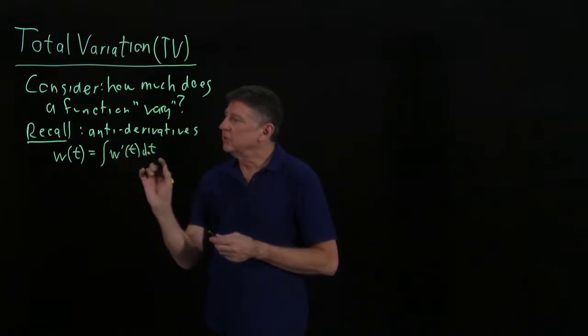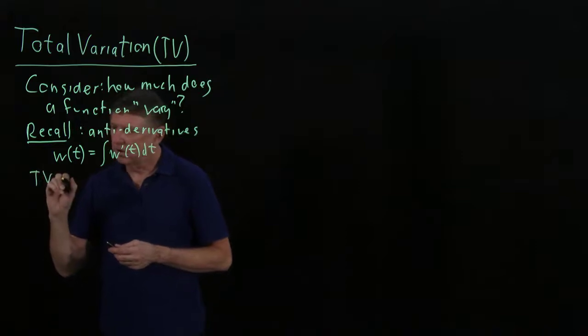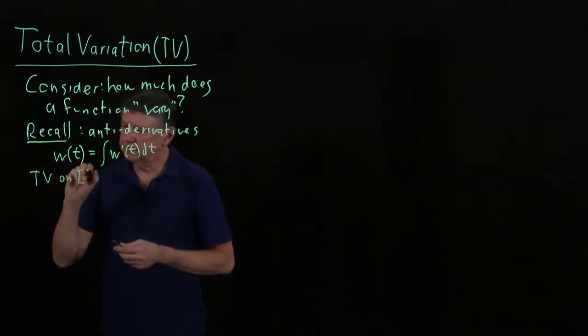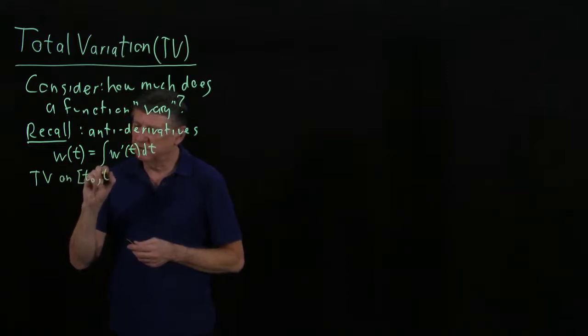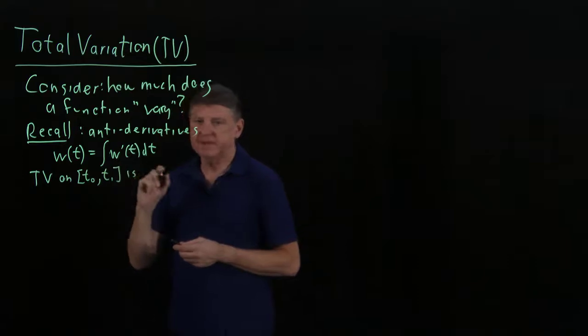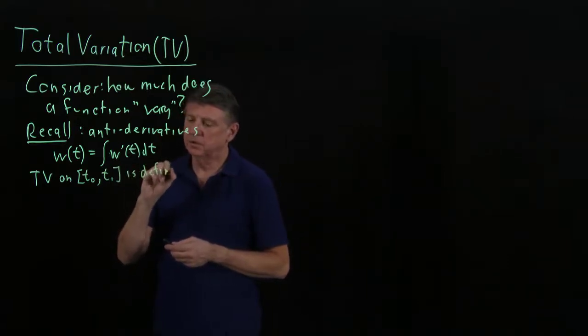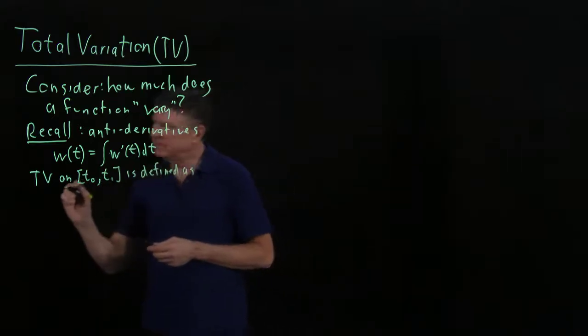And the total variation on some interval, so we go from scalar parameter value 0 to value 1, and this is defined as, and there are two common definitions.